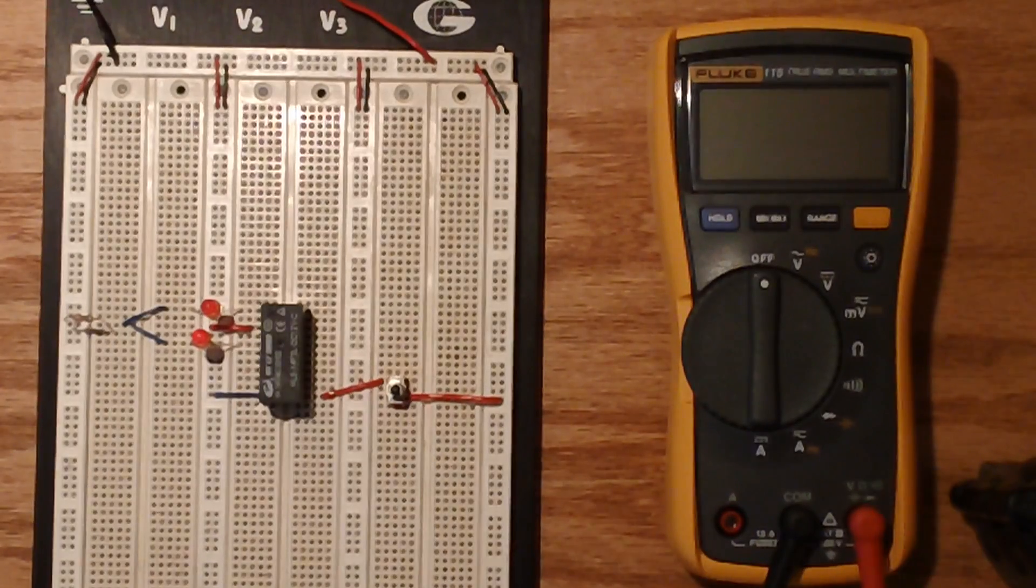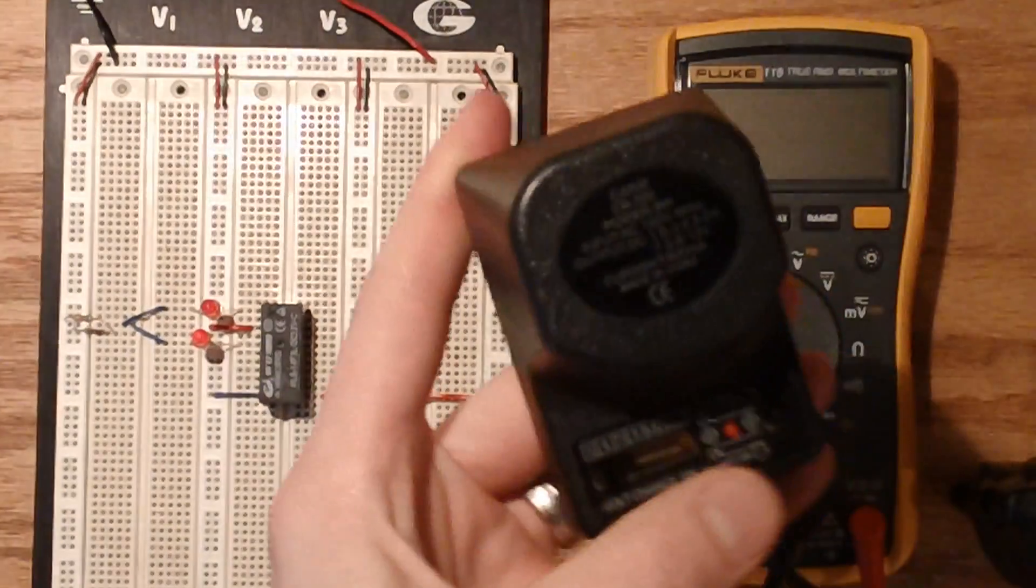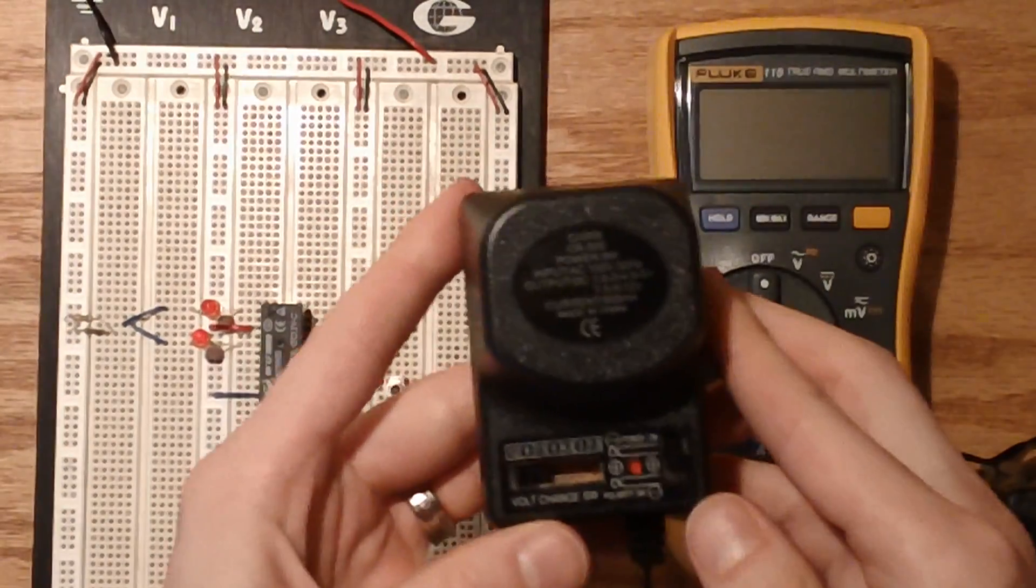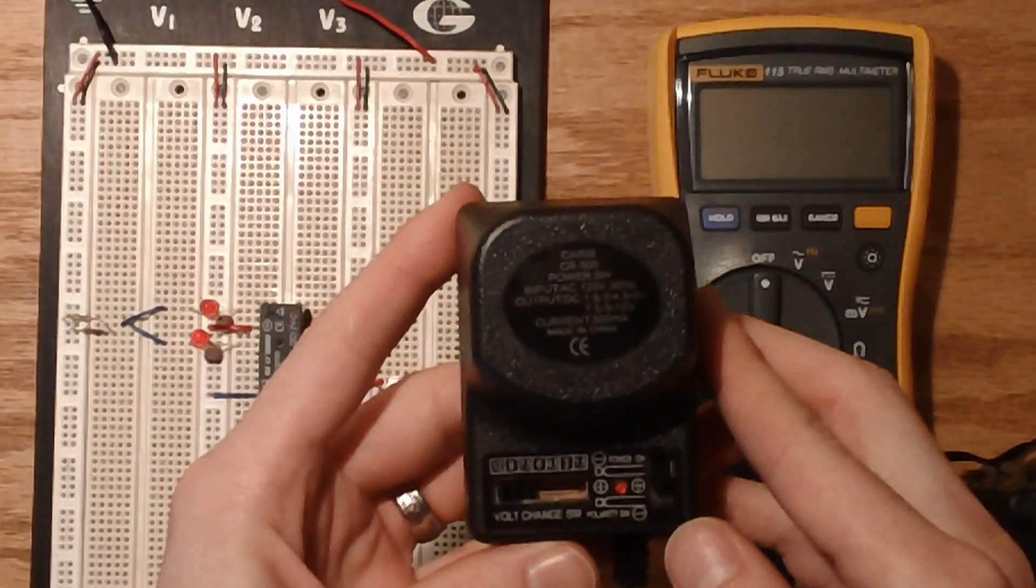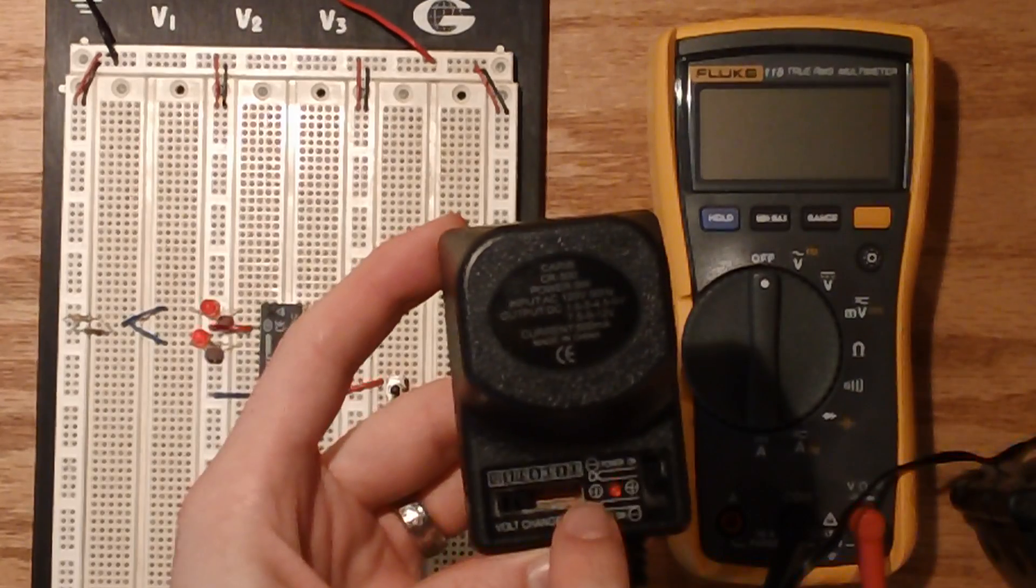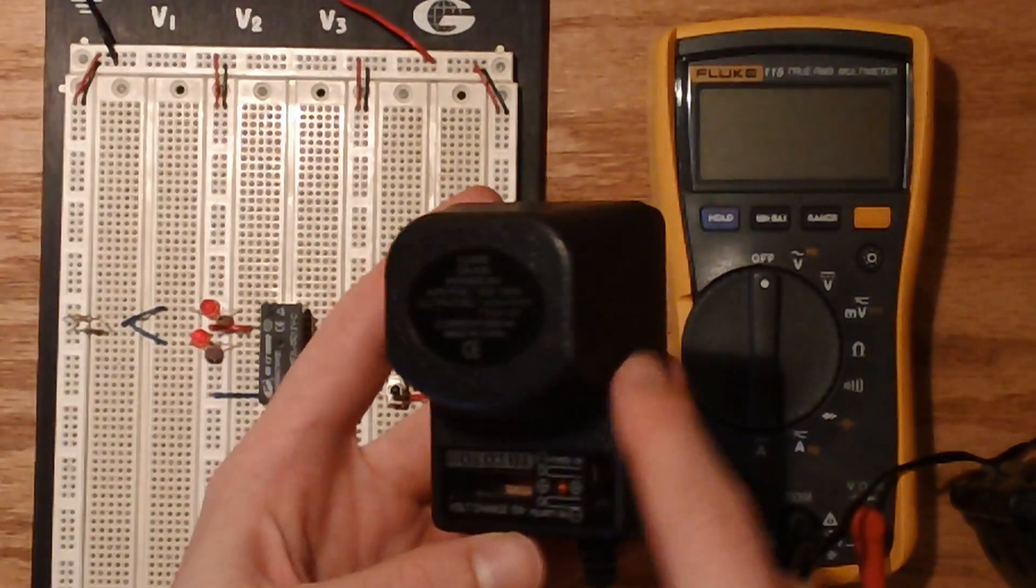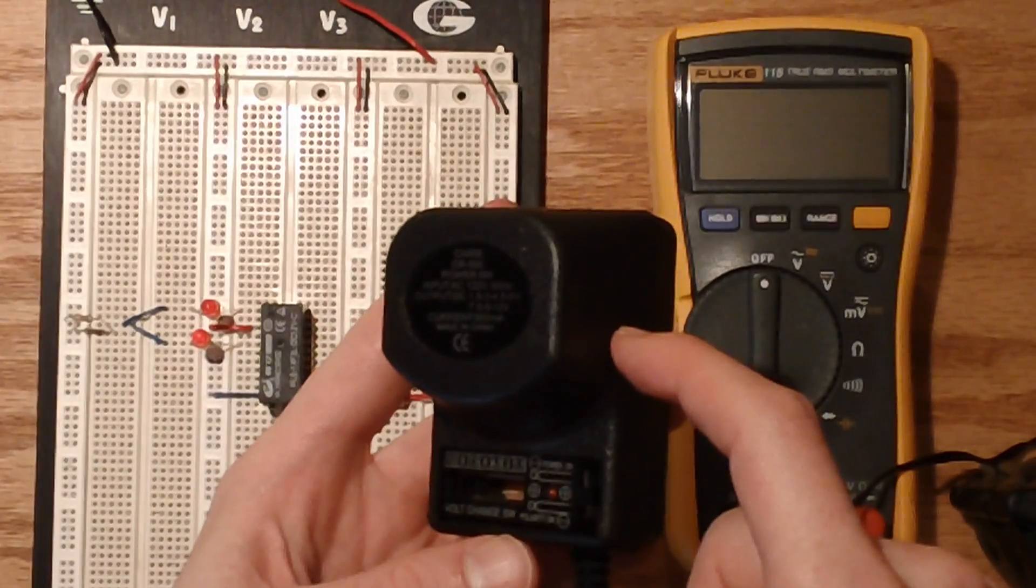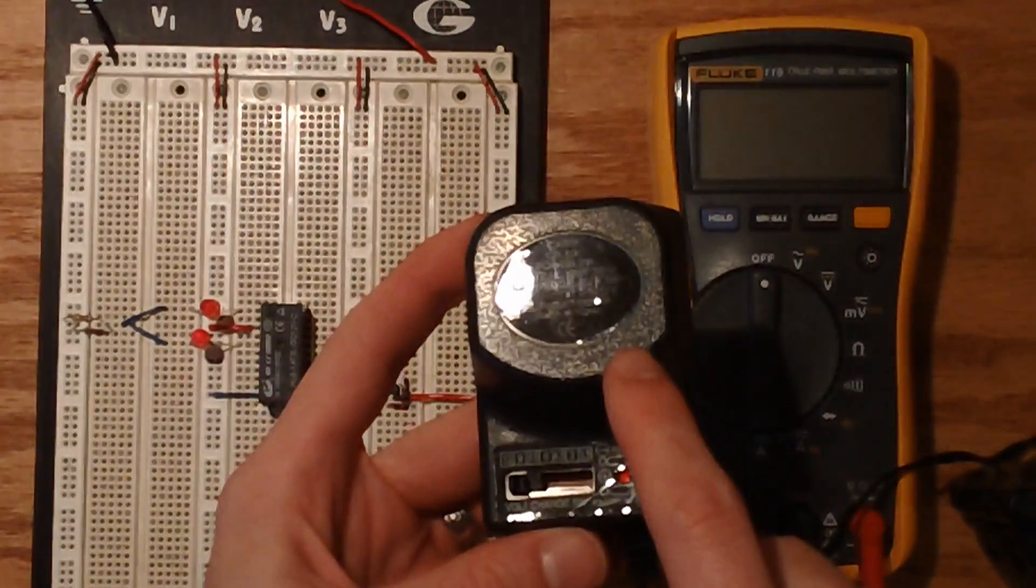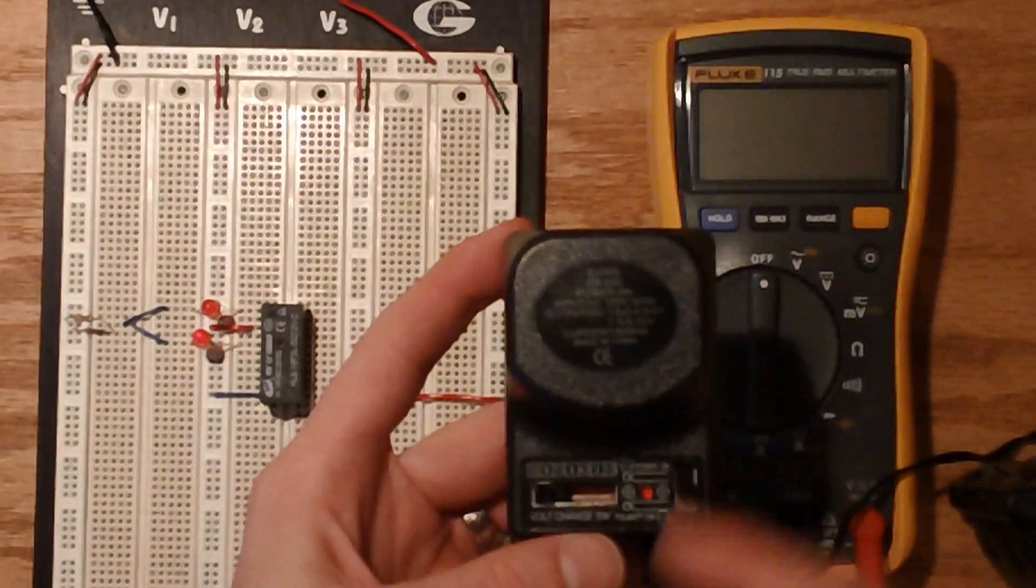So basically this guy is the adapter and as you see it has options of 12 all the way down to 1.5 volts. The goal is to convert alternating current from your house to direct current to supply power to most common electronic devices.